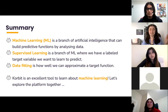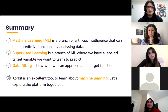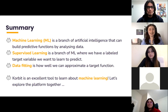So that's a quick overview. The three big points: machine learning is a branch of AI that builds predictive functions by analyzing data. We talked about supervised learning, a branch of machine learning where we have labeled target variables that we want to learn to predict. Finally, data fitting — how well we can approximate a target function with a machine learning model — means finding the right fit to make sure we're not over or underfitting. I encourage you to do some Googling about machine learning because I've just barely scratched the surface.